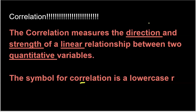Everything important here is underlined. Correlation does measure direction because it is positive or negative — if it's positive, your relationship is going up; if it's negative, your relationship is going down. It measures strength, and we'll talk about that in a little bit. But here's what's really important: correlation is only used if you have a linear relationship between your two variables. If you don't have a linear relationship, don't use correlation.